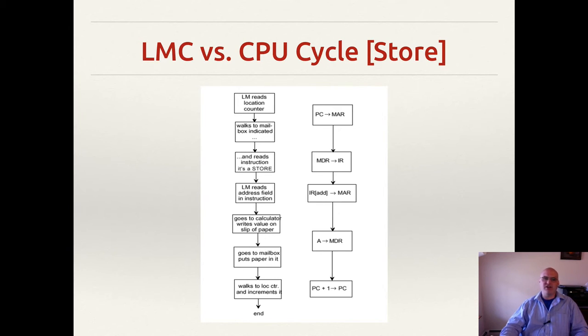Well, the action of him reading the program counter would be us taking the value of the program counter, turning on the bus line between the program counter and the memory address register with a control line, and then populating the latches in the memory address register with whatever bits were in the program counter. So if the program counter had all zeros, a lot of zeros, and then 101, that would be a five in binary.